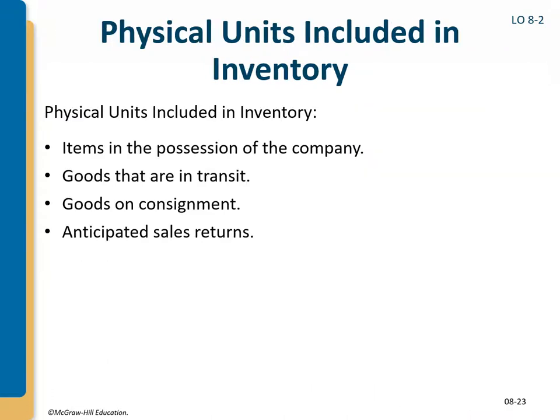Physical units included in inventory is very important. This is not about whether to use periodic or perpetual — it's about whether an item should be in our inventory at all. We look at items in the possession of the company, whether we own goods in transit, whether we have goods on consignment or goods others have on consignment with us, and something regarding anticipated sales returns.